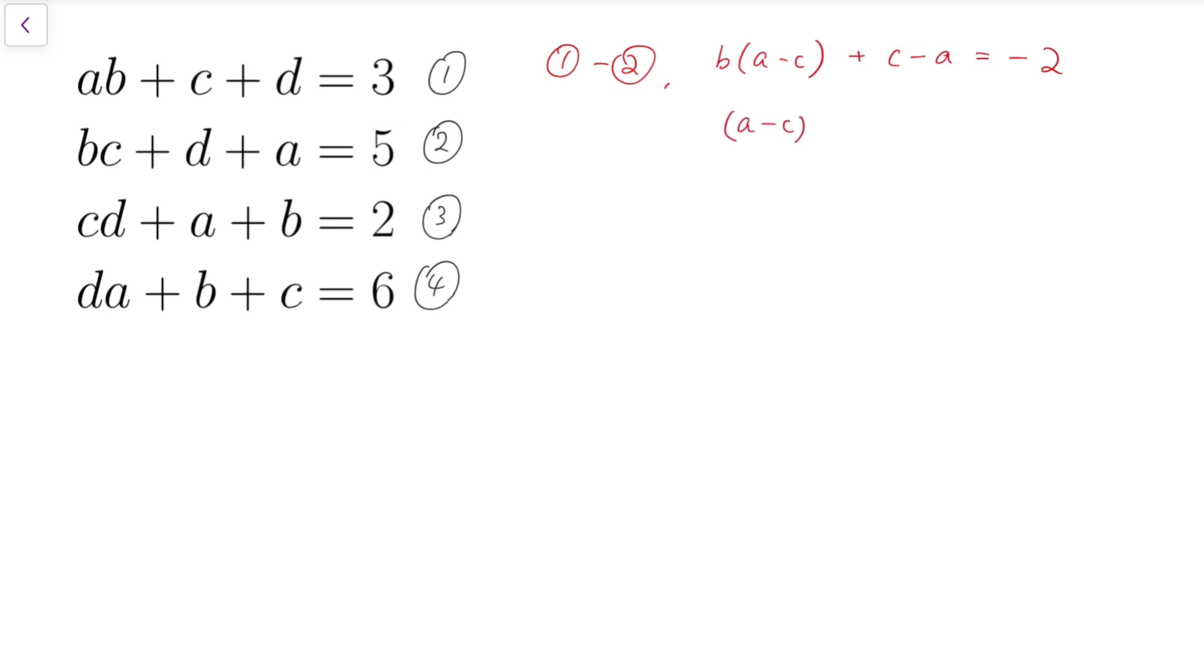So factorizing, I can take out a minus c as a common factor. And I will have a minus c times b minus 1 equals minus 2.